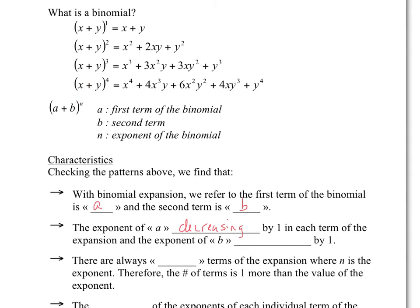The exponent of the second term, y, is going to increase by 1. So there's no y, then y¹; then 0, 1, 2; then 0, 1, 2, 3; then 0, 1, 2, 3, 4. So the exponent of the second term is increasing by 1.